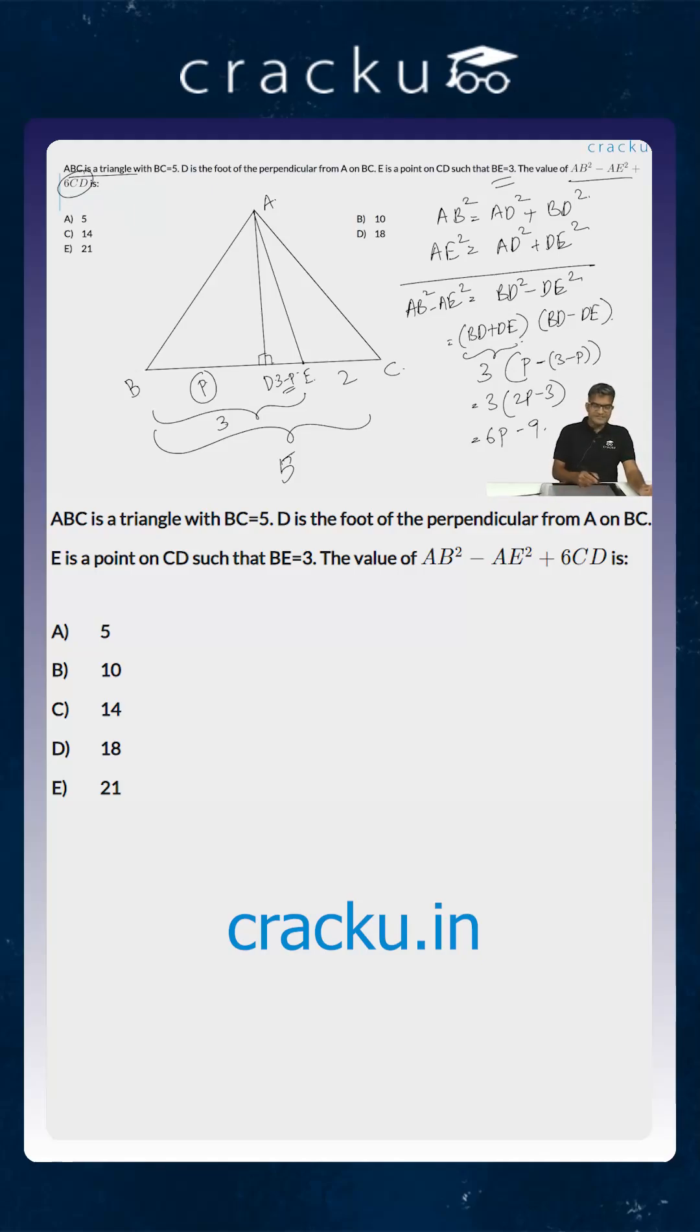What is the value of 6 times CD? What is the value of CD? CD is equal to 3 minus P plus 2 which is equal to 5 minus P. This is the value of CD. So 6CD will be equal to 30 minus 6P.